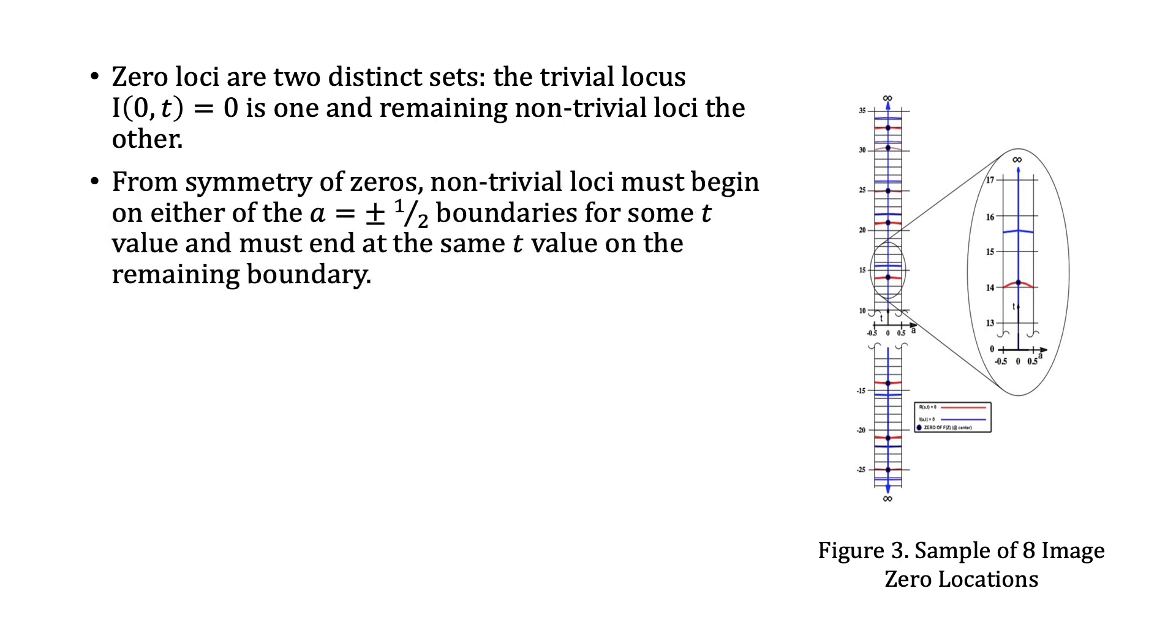From symmetry of zeros, non-trivial loci must begin on either of the a = ±1/2 boundaries for some value of t and must end at the same value of t on the remaining boundary.